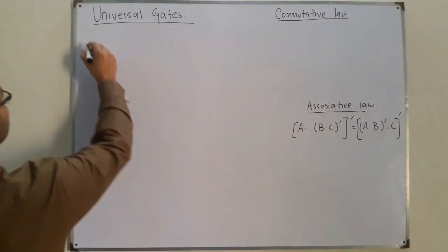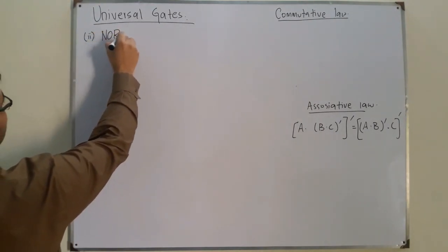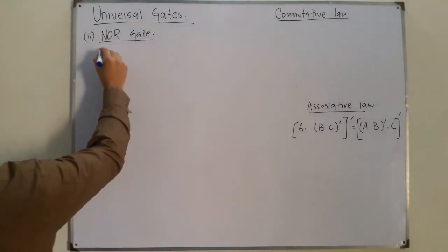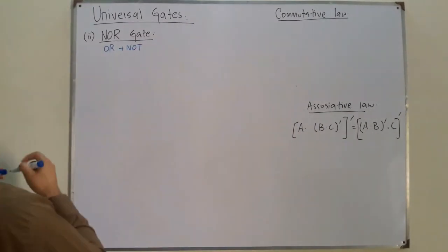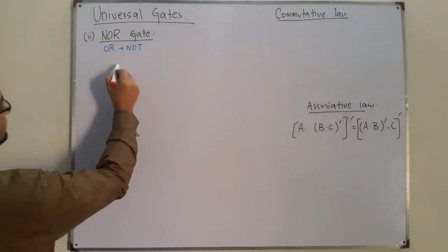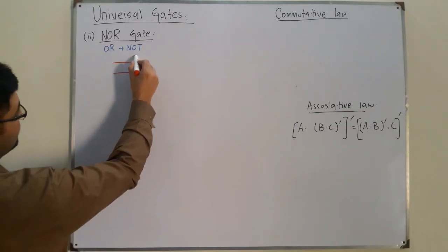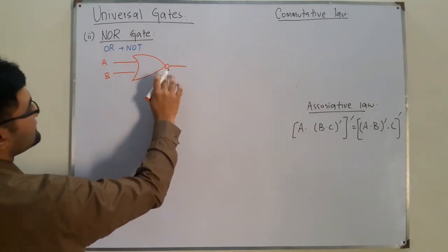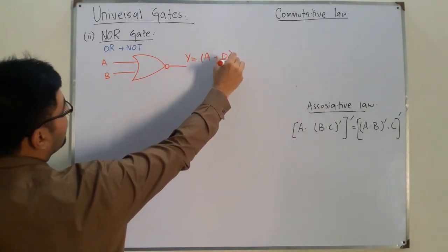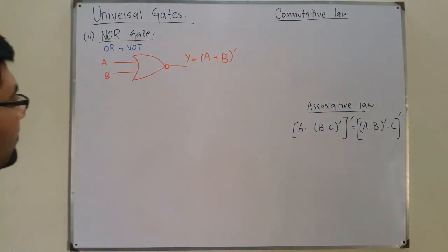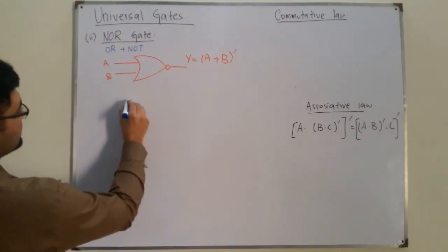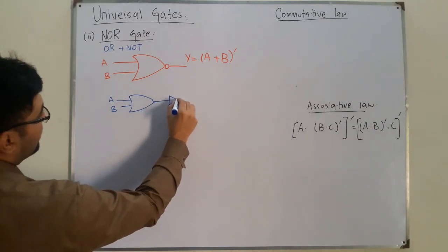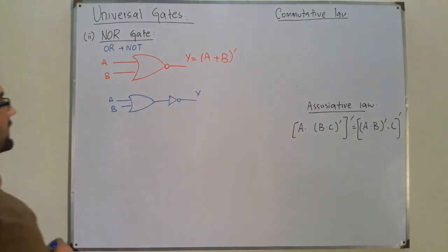The second universal gate is the NOR gate. The NOR gate is a combination of an OR gate plus a NOT gate. The symbol is similar to the OR gate, but with a bubble at the output. This bubble represents the complement. The final output is A OR B whole complement. We can draw it as an OR gate with inputs A and B, whose output is fed to a NOT gate to give output Y.